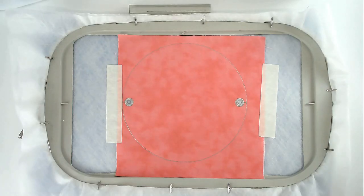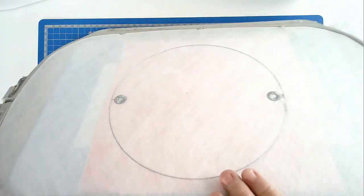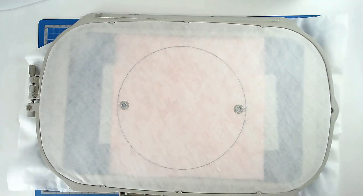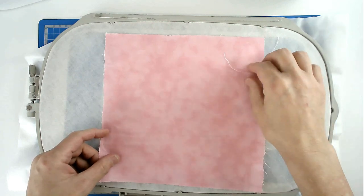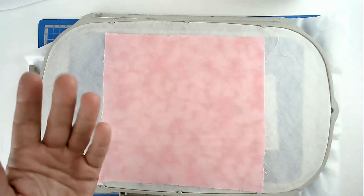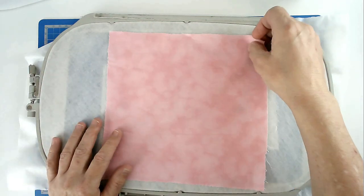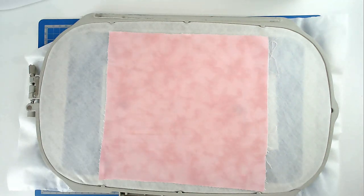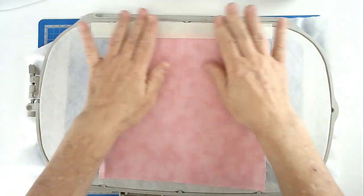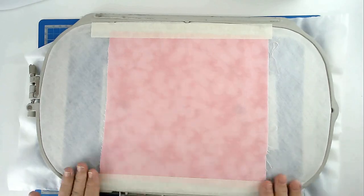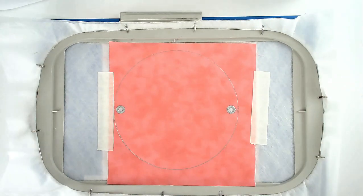You're now going to add your backing fabric, so turn your hoop over, place your fabric over the outline, and you want your fabric facing up, and tape it in place. You're now going to pop your hoop into your machine and stitch round number four, and that's going to secure your backing fabric in place.